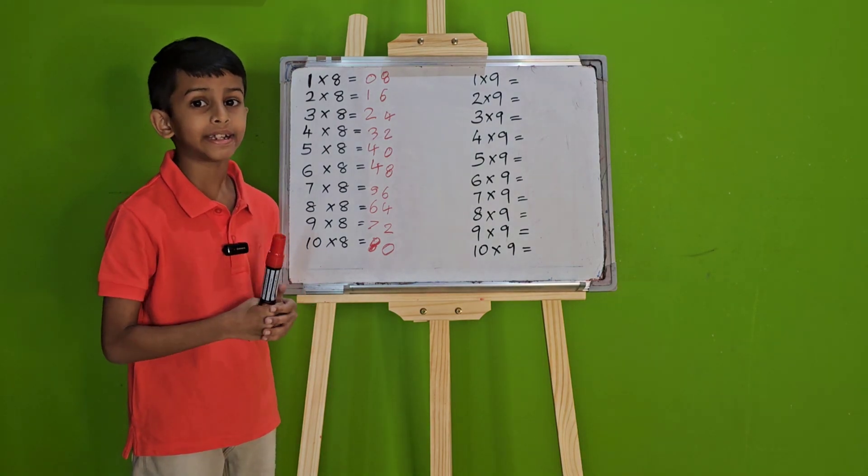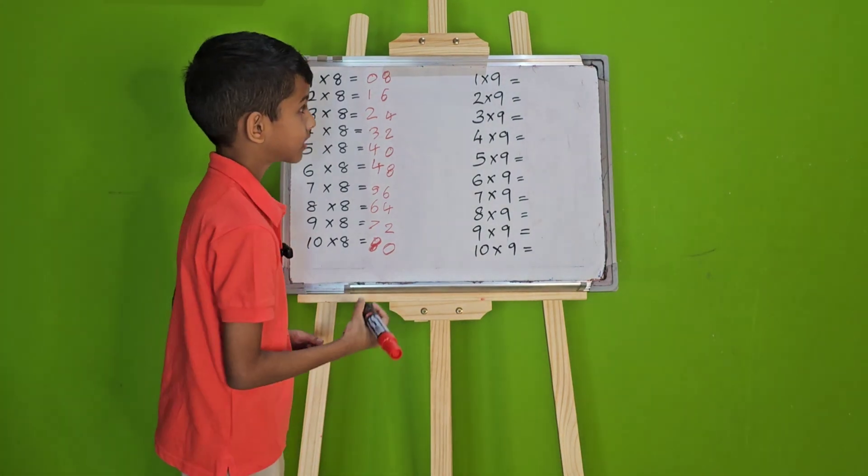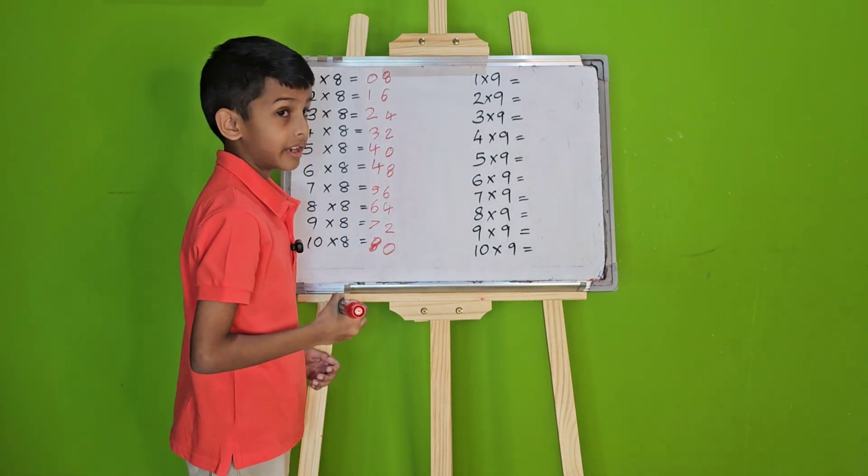Now, let's do our 9 times table. From 1 to 10, write 0 to 9.